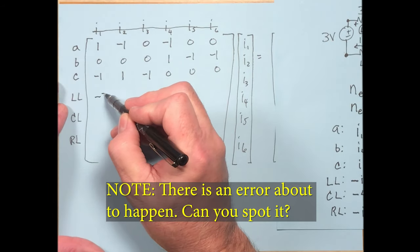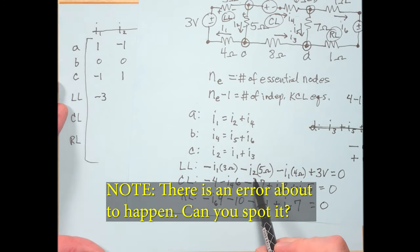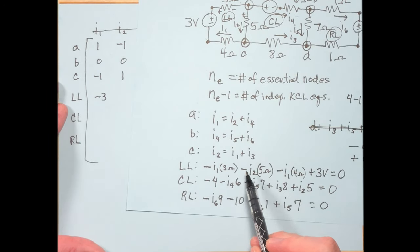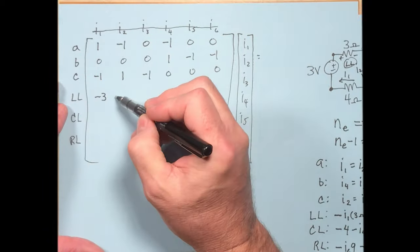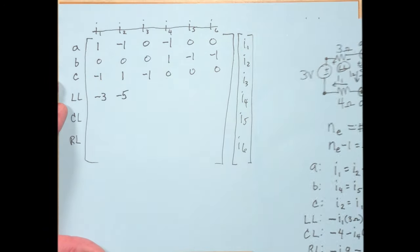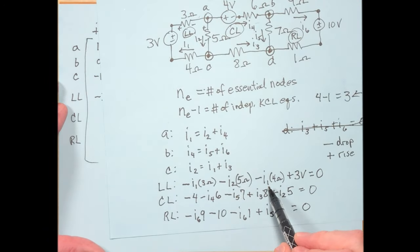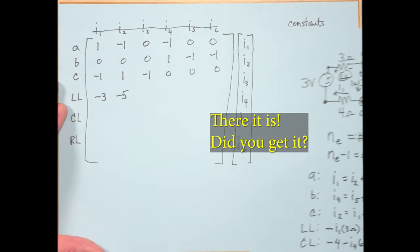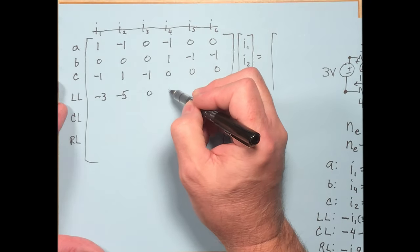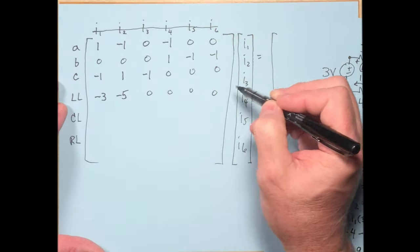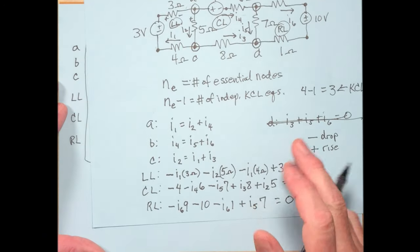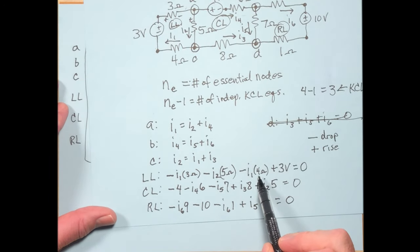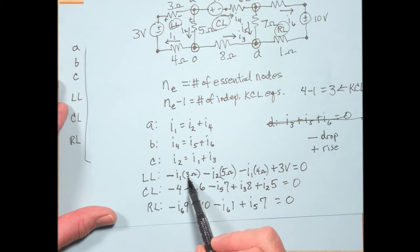For example: once you have all the currents, could you find the voltage across the 6-ohm? Yes — it's minus 6 times I4. Could you find the power of the 1-ohm? Yes — it's I6 squared times 1 ohm. Because it's a resistor (a passive element), the power will always be positive — the resistor dissipates energy.